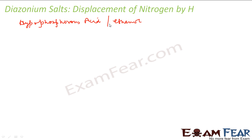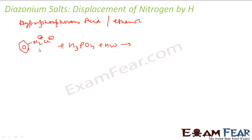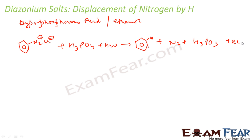For example, if I take my diazonium salt and use hypophosphorous acid (H3PO2) with some water, what I will get is a normal benzene — N2 is replaced by H. Nitrogen gas comes off, and H3PO2 itself gets oxidized to phosphoric acid, that is H3PO3.